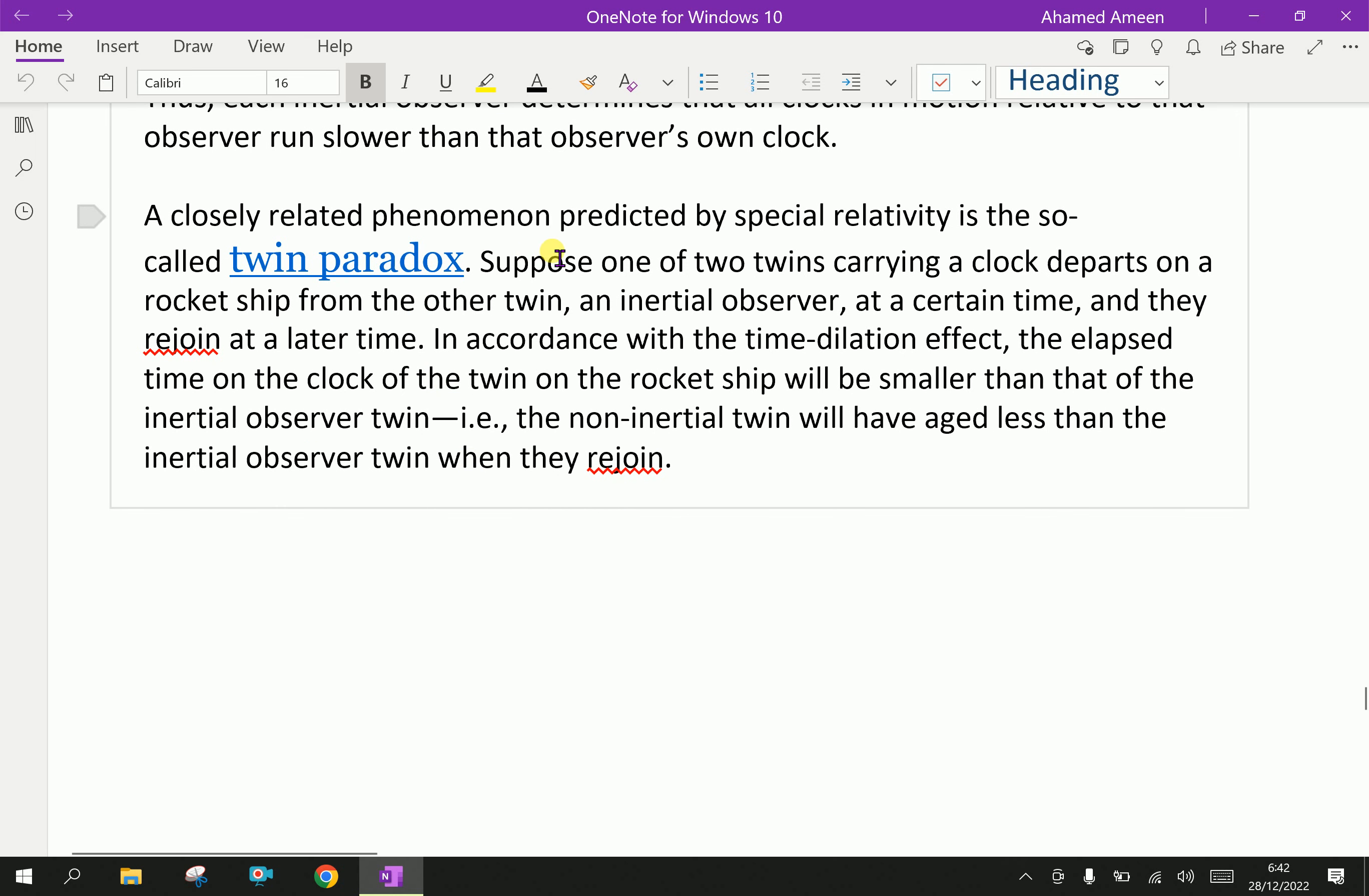A closely related phenomenon predicted by special relativity is the so-called twin paradox. Suppose one of two twins carrying a clock departs on a rocket ship from the other twin. That means one is moving in the rocket with high speed, and the second stays in the home or stays in some reference plane. An inertial observer at a certain time, and they rejoin at a later time. After some time, they rejoin together.